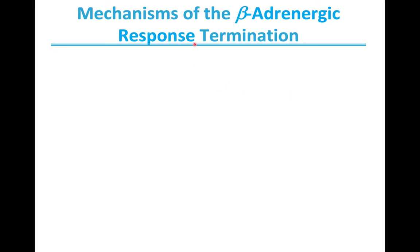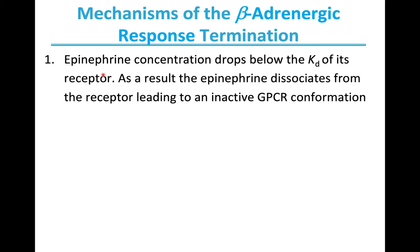There are four mechanisms by which the beta-adrenergic response can be terminated in cells. In the first case, the epinephrine concentration drops below the KD of its receptor. If the epinephrine concentration drops below that KD, epinephrine dissociates from the receptor, leading to an inactivated GPCR conformation. An active beta-adrenergic receptor conformation is required to activate G-proteins; in the absence of epinephrine, the GPCR is no longer active.